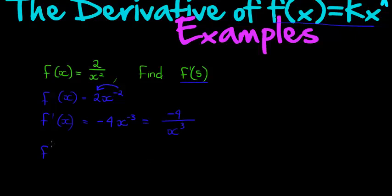So what would the derivative at the point 5 be? It would be negative 4 over 5 to the power of 3, which is negative 4 over 125. And that's it.